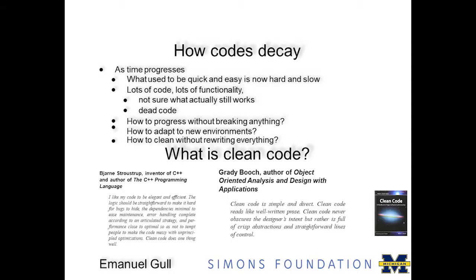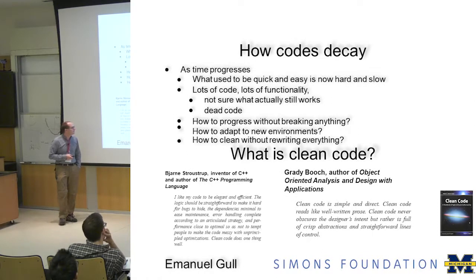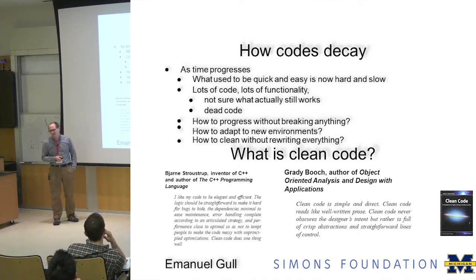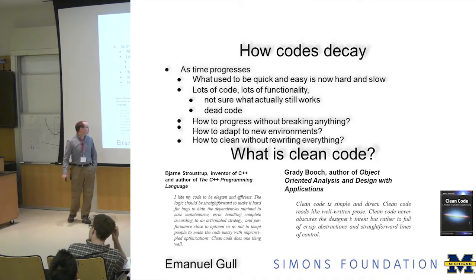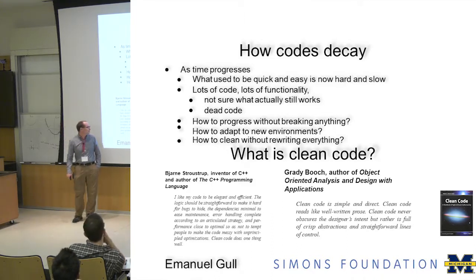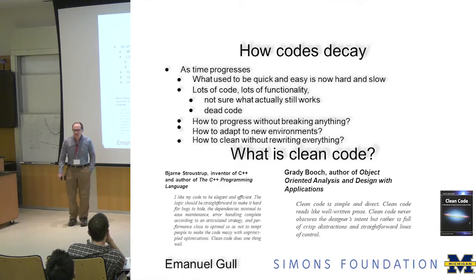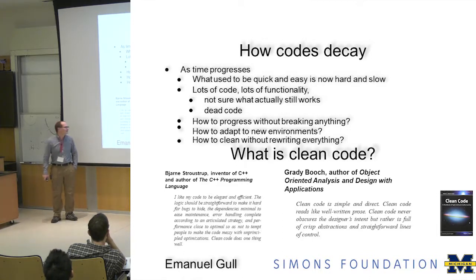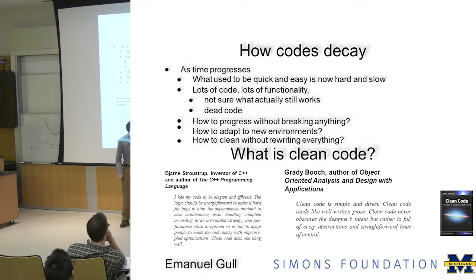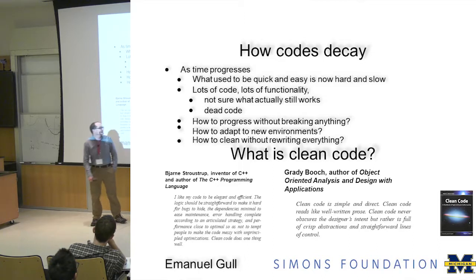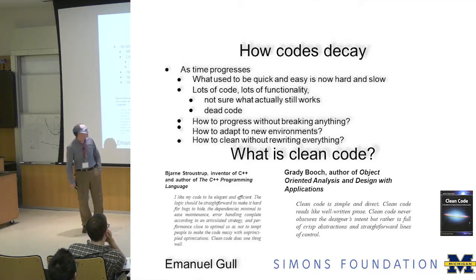How do you adapt to new environments and clean what you have without restarting from scratch? The inventor of C++ says: 'I like my code to be elegant and efficient. The logic should be straightforward to make it hard for bugs to hide. The dependencies are minimal to ease maintenance, error handling complete according to an articulated strategy.' And who among us has an articulated error handling strategy?